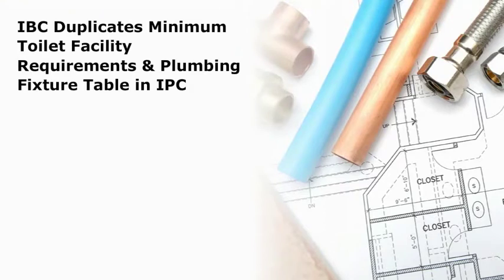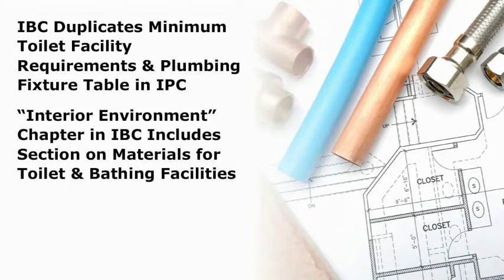The IBC also duplicates the minimum toilet facility requirements and the plumbing fixture table found in the IPC. In addition, the Interior Environment chapter of the IBC includes a short section on materials for toilet and bathing facilities.